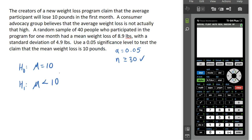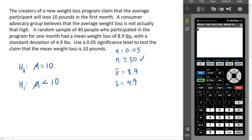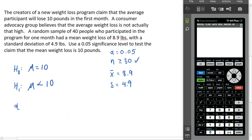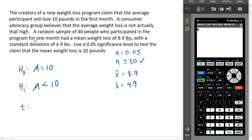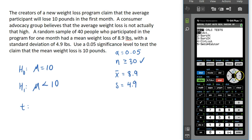Once we have our hypotheses, we need a test statistic. We have a sample mean of 8.9 pounds and a sample standard deviation of 4.9 pounds — that data comes strictly from our sample of 40 people — so we are using the t statistic. We go to our calculator, press STAT, go over to Tests, and go down to the second option, which is the T-Test. For a hypothesis test for the mean, we will probably be using the T-Test. If you had the population standard deviation, you would use the Z-Test, but we are using the T-Test.